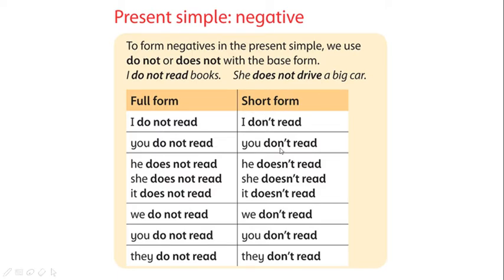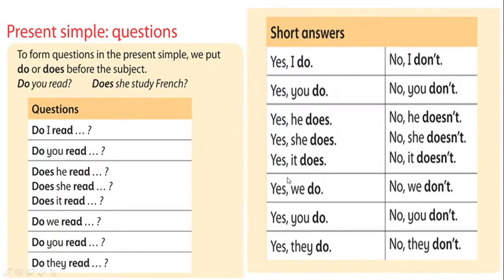The short form: instead of saying 'do not', we say 'don't'. Instead of 'does not', we say 'doesn't'. For questions — yes/no questions — you put the auxiliaries do or does before the subject. Do I read? Do you read? Does she read? Does it read? Do we read? For a yes/no question, remember to raise your voice. For example: 'Does she study French?'